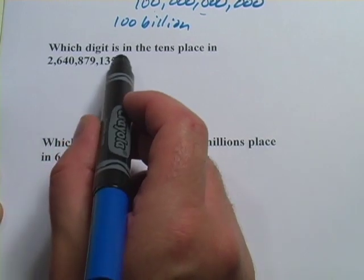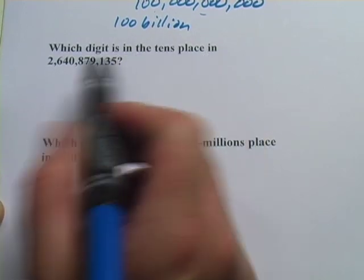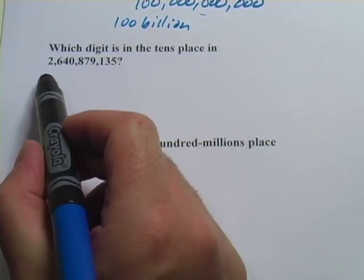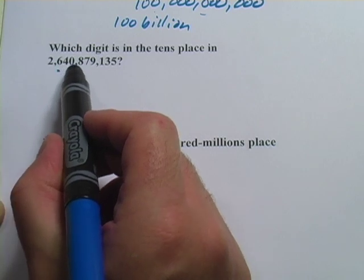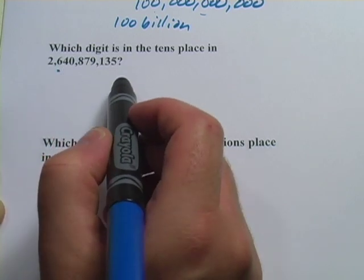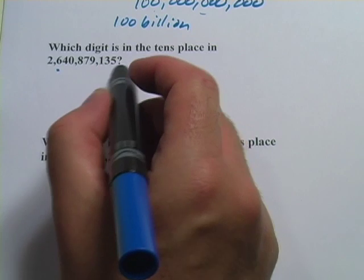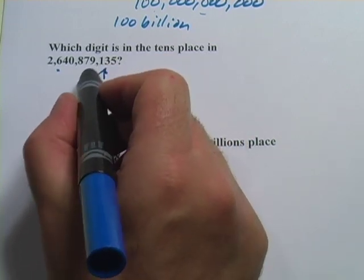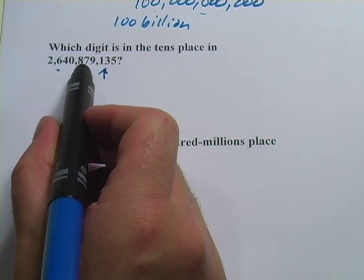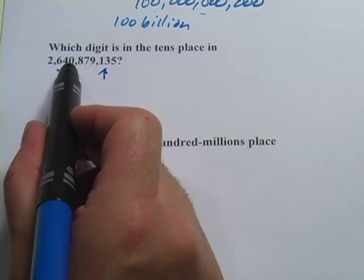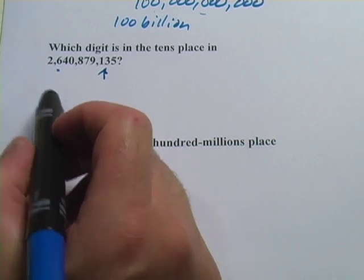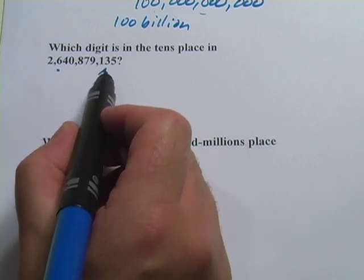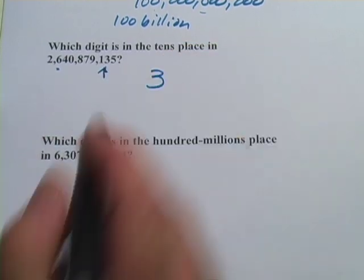Let's look at another one. Which digit is in the tens place in this number, and this number is 2,640,879,135. Well the tens place is right here. It goes ones, tens, hundreds, thousands, 10,000s, 100,000s, millions, 10,000s, 100,000s, billions. So the digit that's in the tens place is just 3.